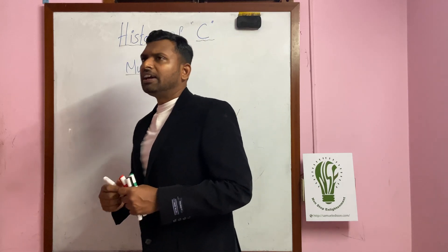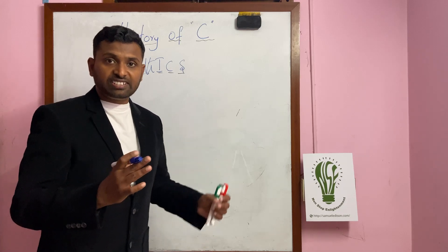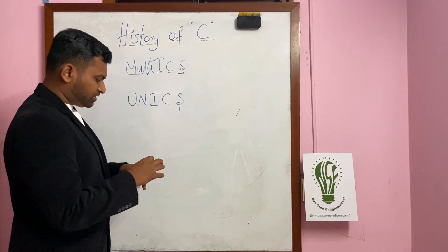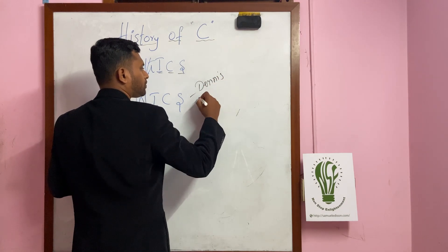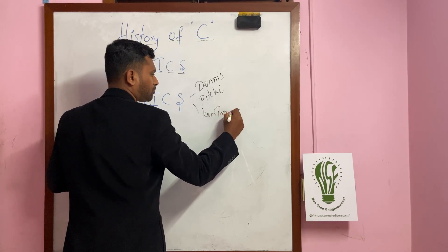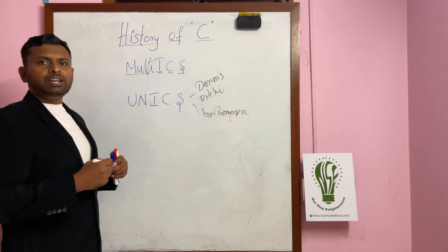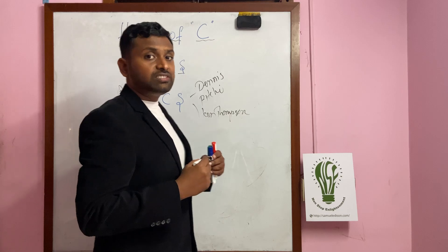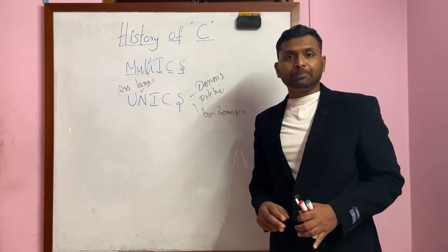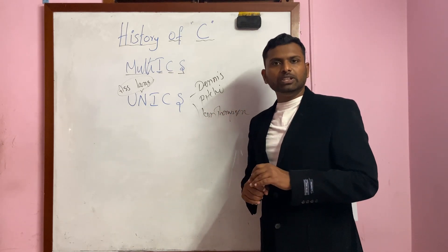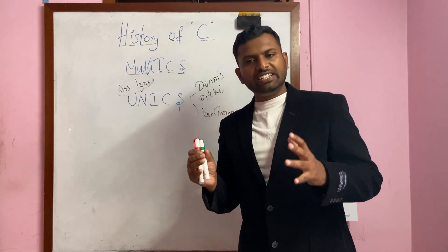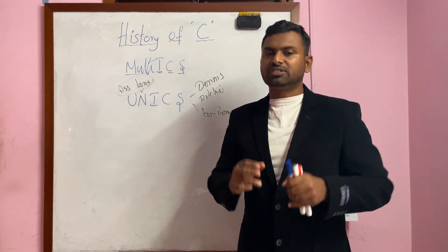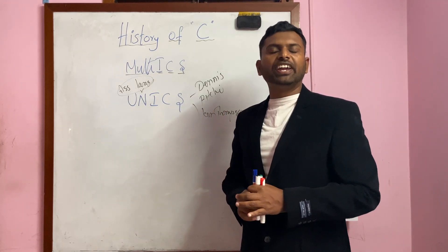After a long research, in the late 60s — around 1969 — they developed an operating system called UNICS. This was developed by Dennis Ritchie and Ken Thompson, and they developed this operating system with the help of assembly language. The operating system was developed and everyone was happy, but one problem was there: assembly language is not portable. For every system or every machine, you need to type the code again and again — it is not portable.